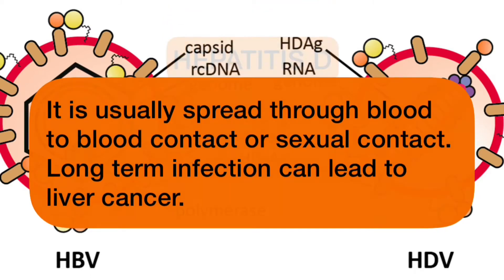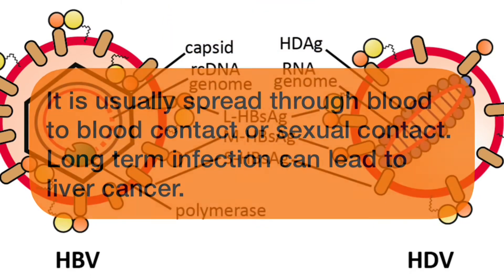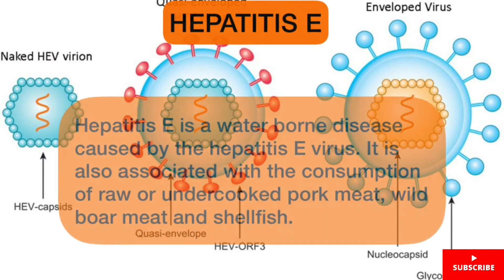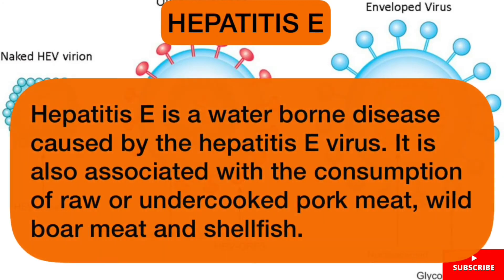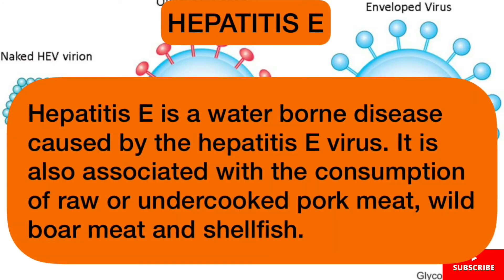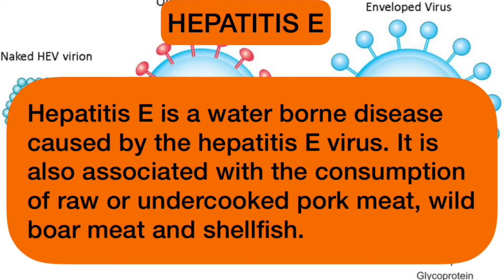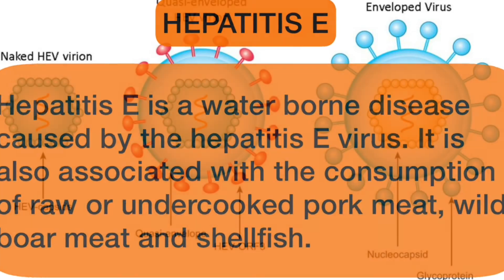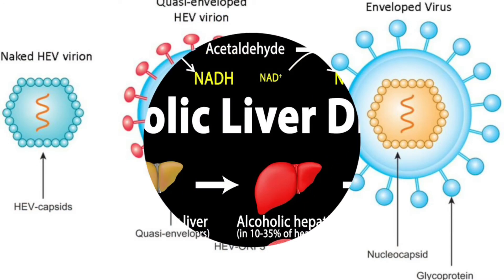Hepatitis E is a waterborne disease caused by the Hepatitis E virus. It is also associated with the consumption of raw or undercooked pork meat, deer meat, and shellfish.